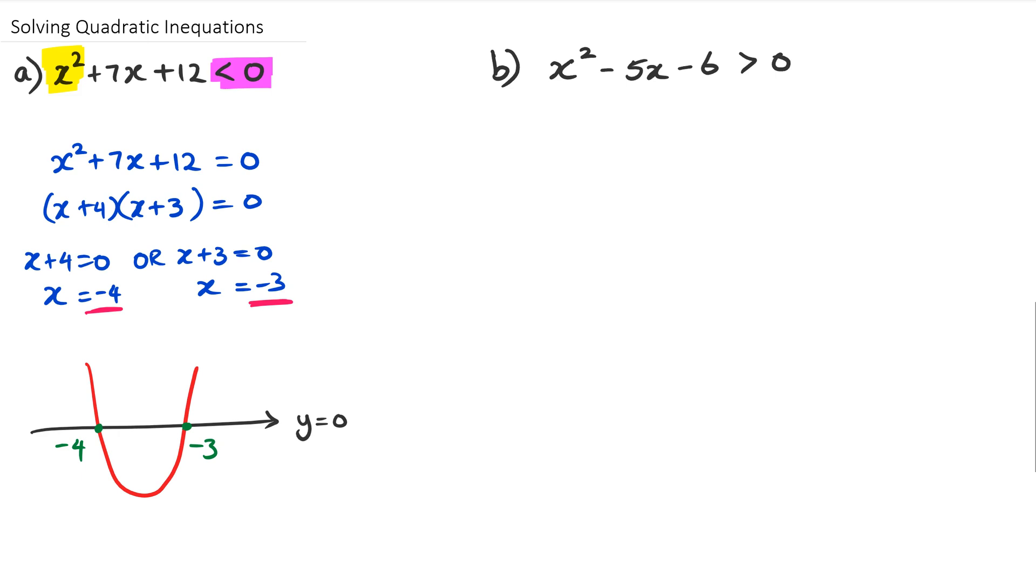So we're looking for when is this equation below the x-axis or below when y-value equals zero. So the zone we're looking for is actually between negative four and negative three. And so the way we write this final answer is we actually write down negative four first and x is actually between negative four and negative three. So this is how we write the answer down for question A.